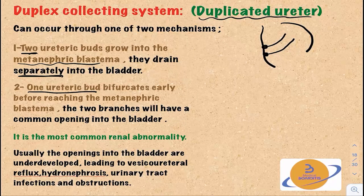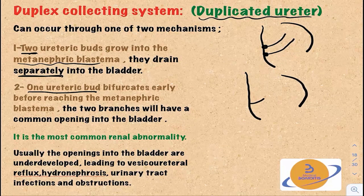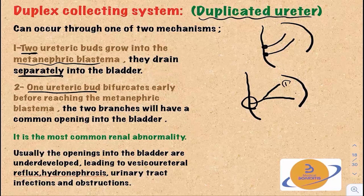In the second case, it is actually one ureteric bud that bifurcates early before reaching the metanephric blastema. If this is the mesonephric duct, and this is the ureteric bud, and this is the metanephric blastema — before reaching the metanephric blastema, the ureteric bud will bifurcate into two divisions. In this case, the ureter still opens into the bladder through one opening, but we still have two ureters.